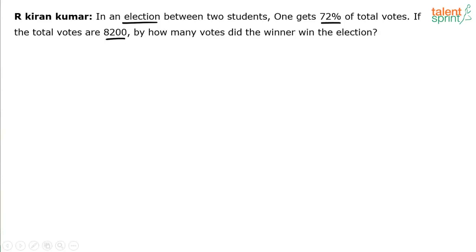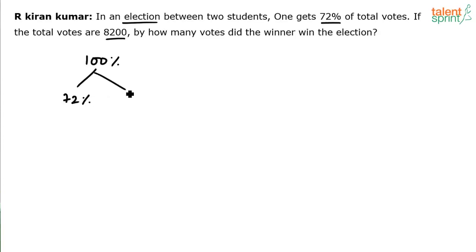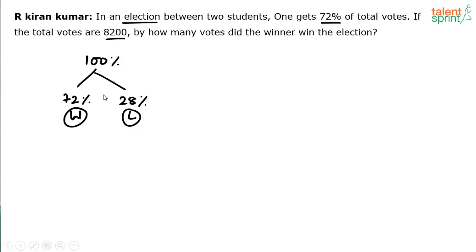The only tricky part here could be understanding the question properly. Out of total 100% votes, if one gets 72%, we have to assume that the other person has got the remaining 28% of the votes. So obviously, one is the winner and the other is the loser. 72% were given to one person, and the other person who got the remaining 28% has lost the election.